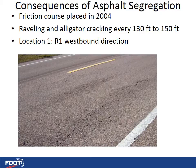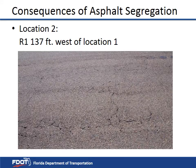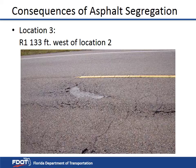Location 1 is shown here with a concentration of alligator cracking near the wheel paths. Location 2 is located 137 feet west of Location 1, also showing alligator cracking, raveling, and patched potholes. Location 3 is located 133 feet west of Location 2.